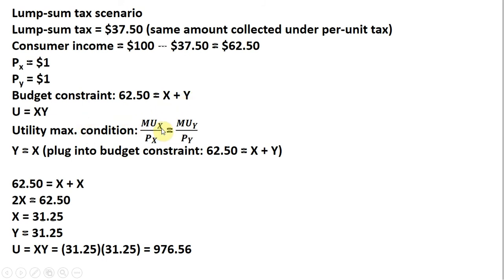Setting up our utility maximizing condition. If you do that and simplify, you're just going to get this nice result: Y equals X. And we're going to plug that into our budget constraint, our new budget constraint. And doing that, 2X equals 62.50. Dividing through by 2, X equals 31.25 units. And since Y equals X, Y equals 31.25 units. Our level of utility here, you'll notice, is higher. So therefore, the consumer prefers the lump sum tax over the per-unit tax.